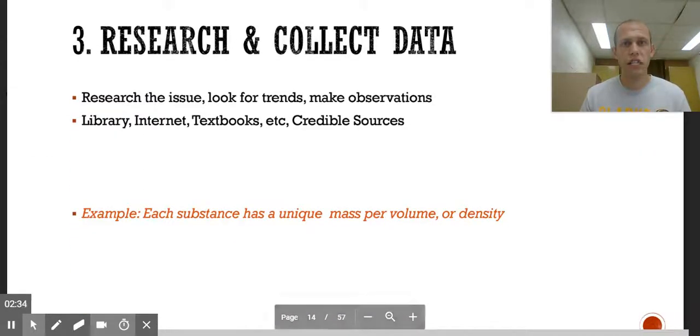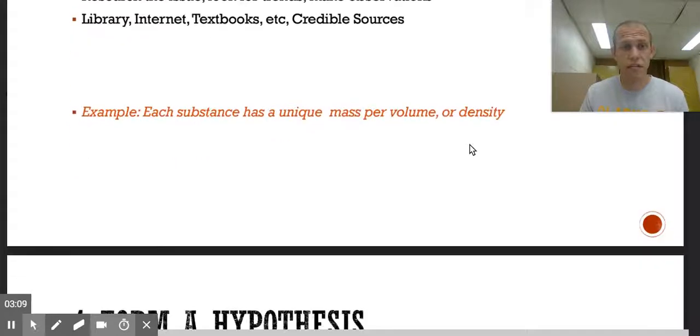Next, research and collect data. That might be looking for trends and what's happening in the situation. It might be you recording some observations, going to the library, opening up a textbook, talking to other people that are knowledgeable in the field, or looking at other credible sources. In our example, Archimedes knew or researched that each substance has a unique mass per volume, a density. So gold has a unique density. We need to figure out if gold and that crown have the same density.